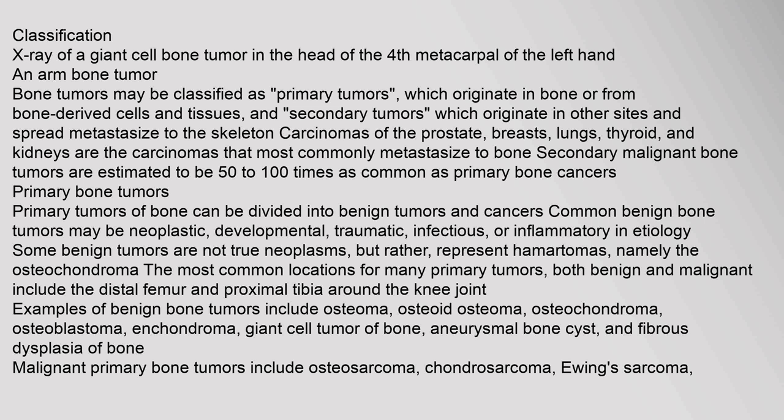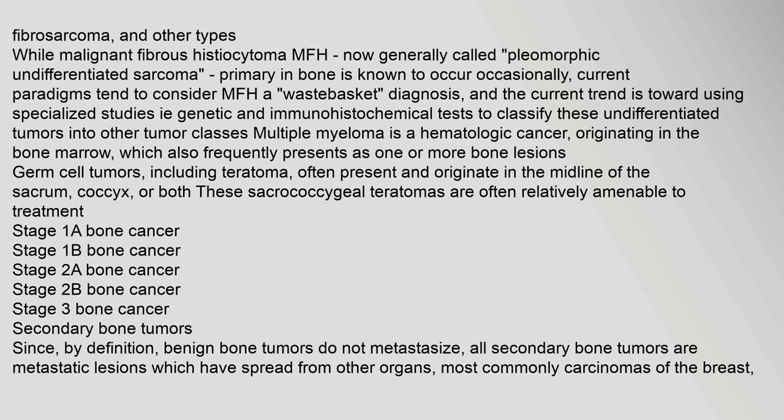Malignant primary bone tumors include osteosarcoma, chondrosarcoma, Ewing's sarcoma, fibrosarcoma, and other types. While malignant fibrous histiocytoma (MFH), now generally called pleomorphic undifferentiated sarcoma primary in bone, is known to occur occasionally, current paradigms tend to consider MFH a 'wastebasket' diagnosis. The current trend is toward using specialized genetic and immunohistochemical tests to classify these undifferentiated tumors into other tumor classes.